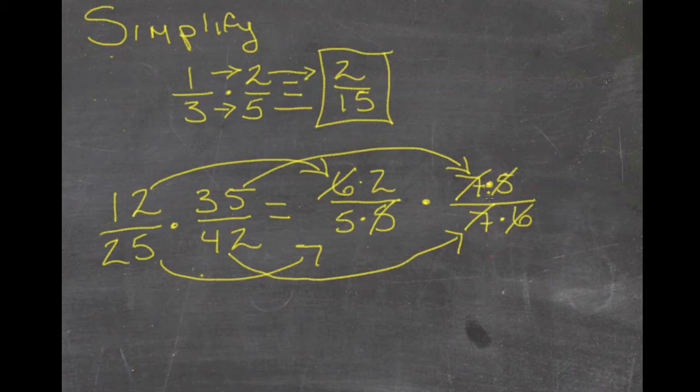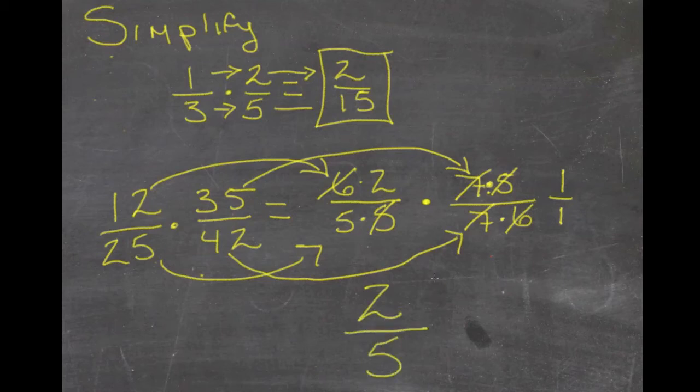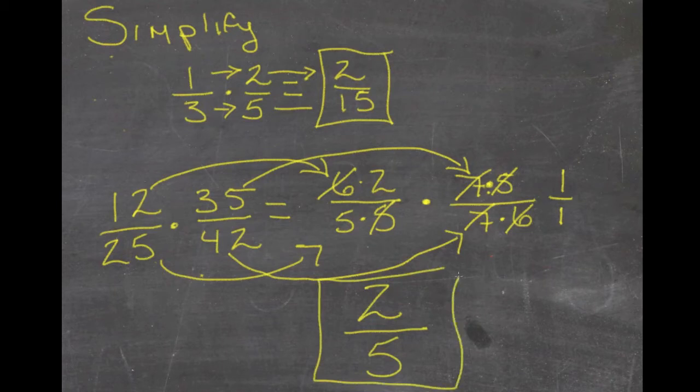This entire fraction canceled out to 1 over 1. So since we're going to be multiplying by 1 over 1, we can just pretty much ignore this entire side. Over here, 6 and 5 canceled out, so we have 2 left on top and 5 left on the bottom. 2/5 is our final answer.